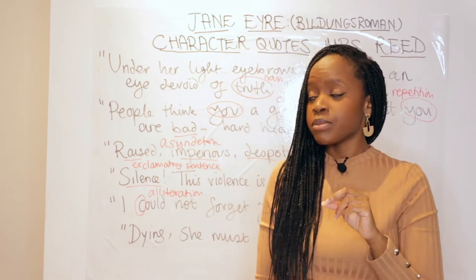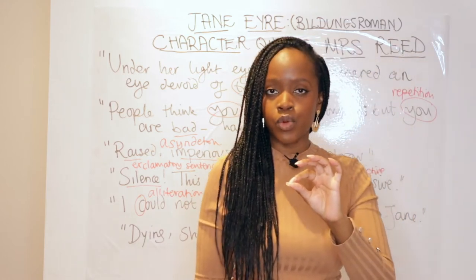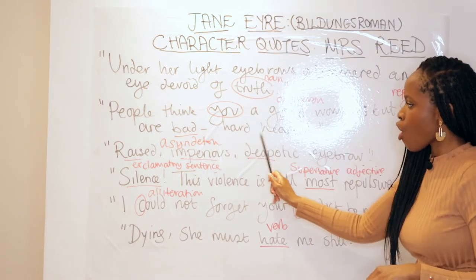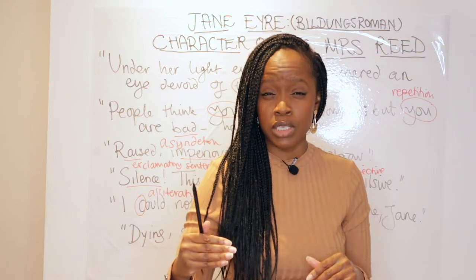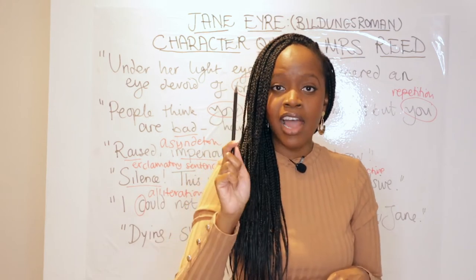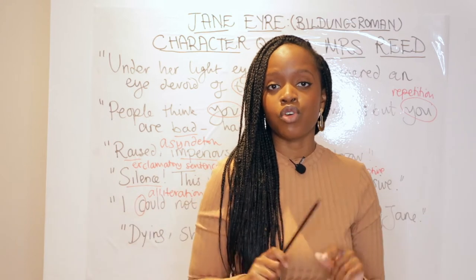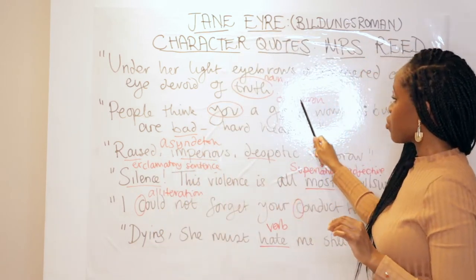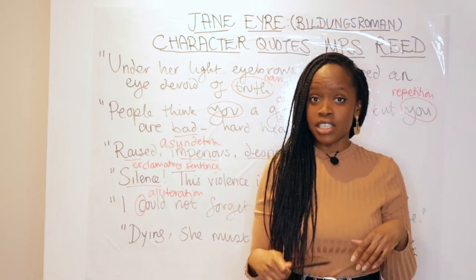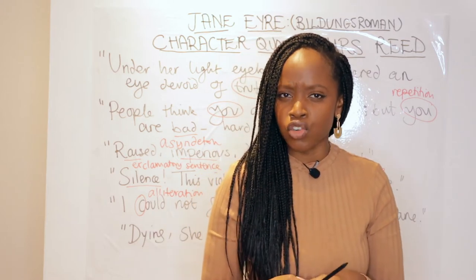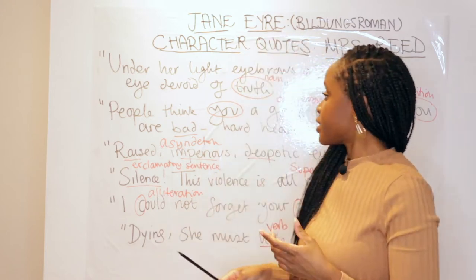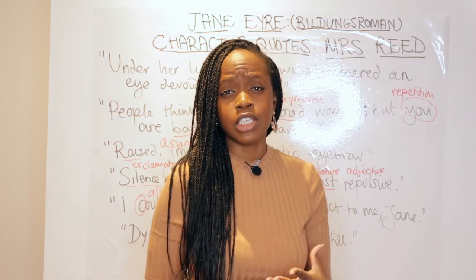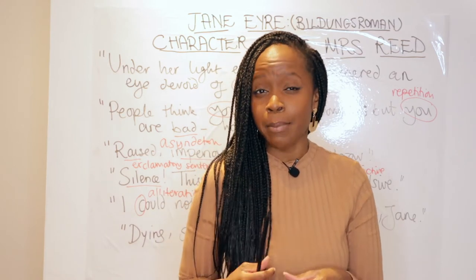The second quotation to remember is when Jane, before she leaves for Lowood, stands up to Mrs. Reed. She's very angry and tells her: 'People think you a good woman, but you are bad, hard-hearted.' This is the first time Jane really steps outside her social position as an orphan and criticises Mrs. Reed in front of everybody, including Mr. Brocklehurst, and Mrs. Reed never forgives her for it. The word level analysis here is firstly the oxymoron — the opposition of good versus bad — showing Jane calling Mrs. Reed a hypocrite outwardly. The other device is the repetition of the pronoun 'you,' illustrating just how damning Jane is of her auntie.